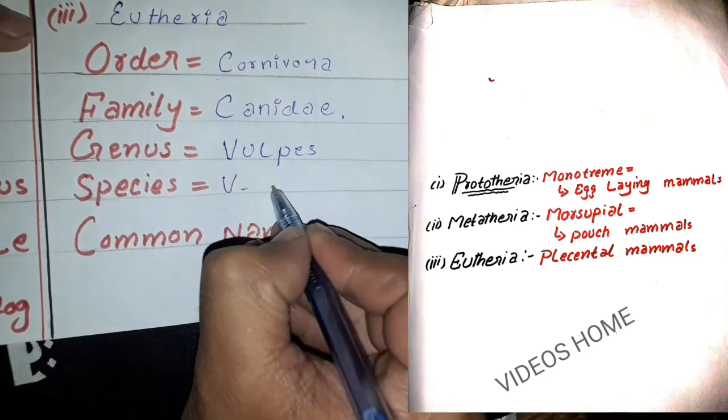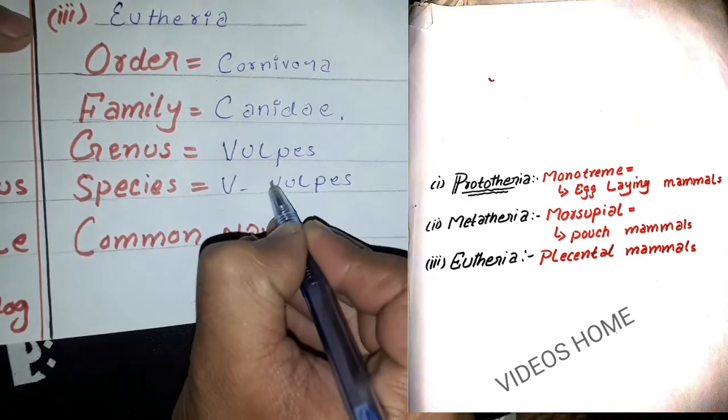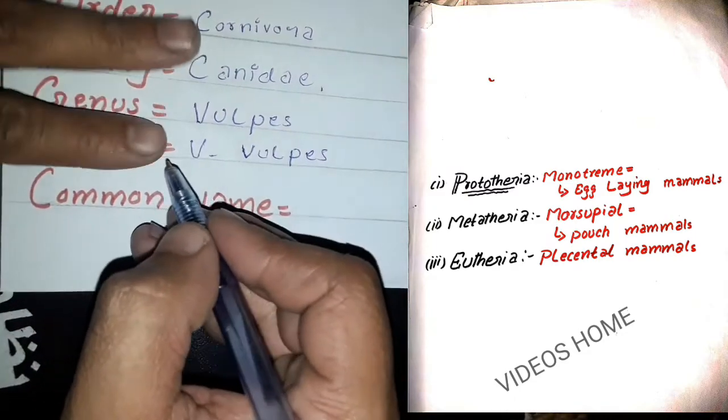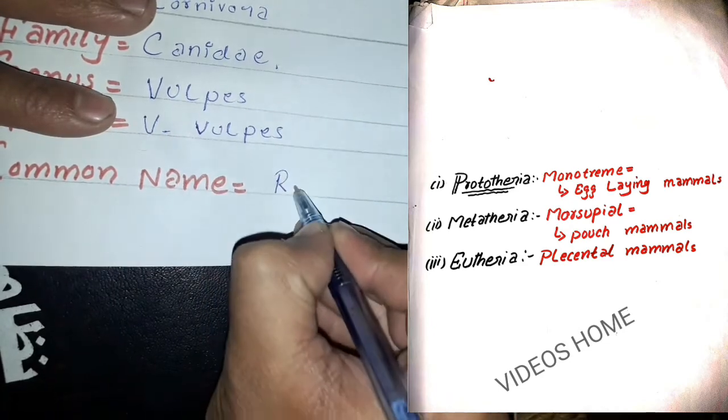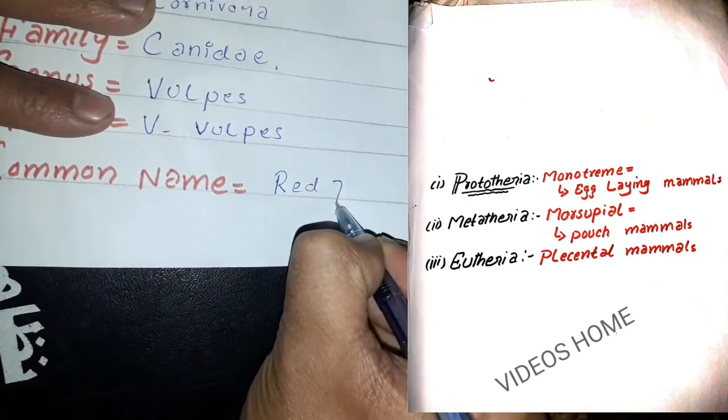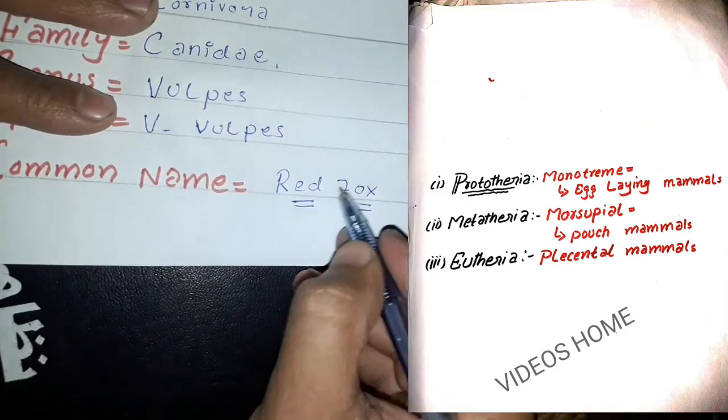Genus Vulpes, species is also Vulpes. Common name: red fox. So that's the classification of red fox.